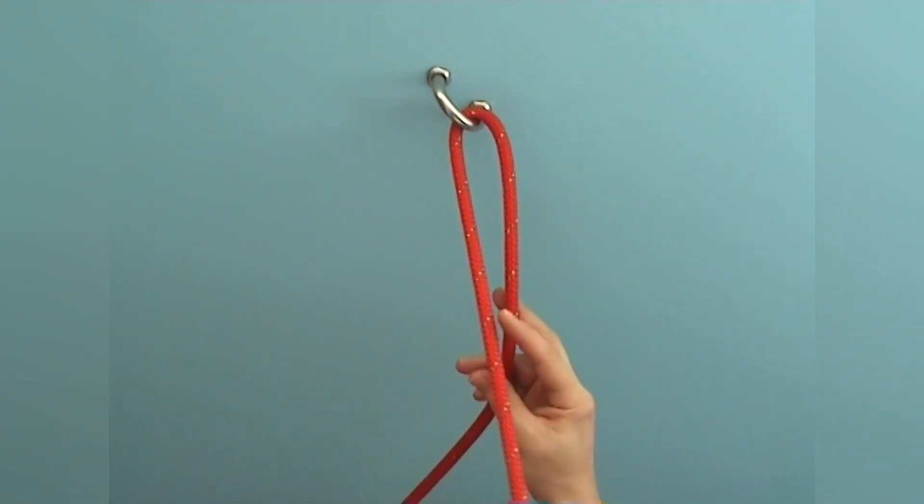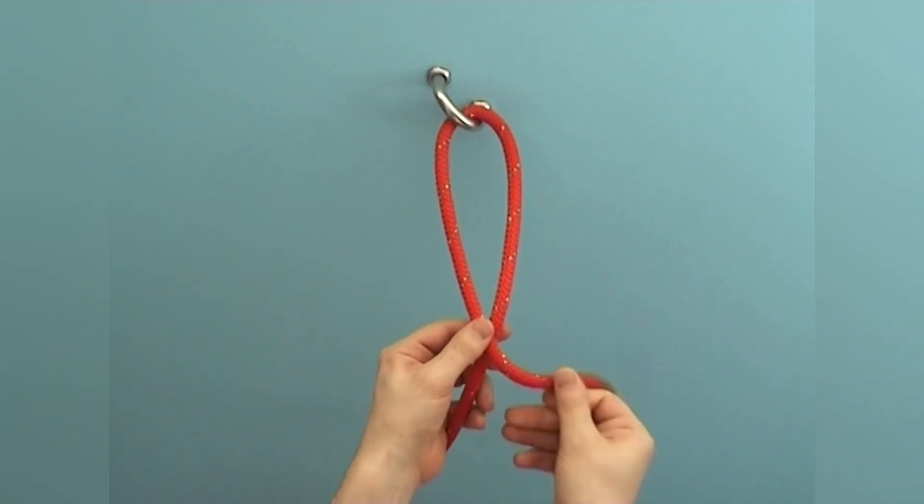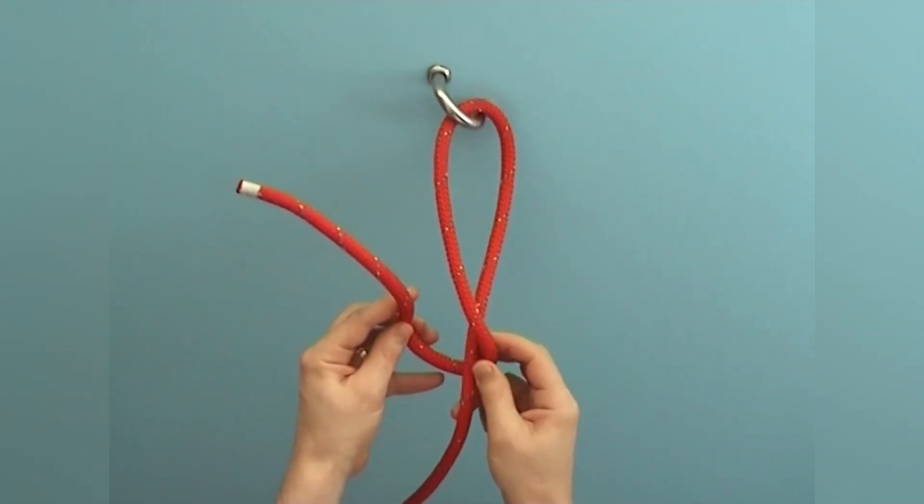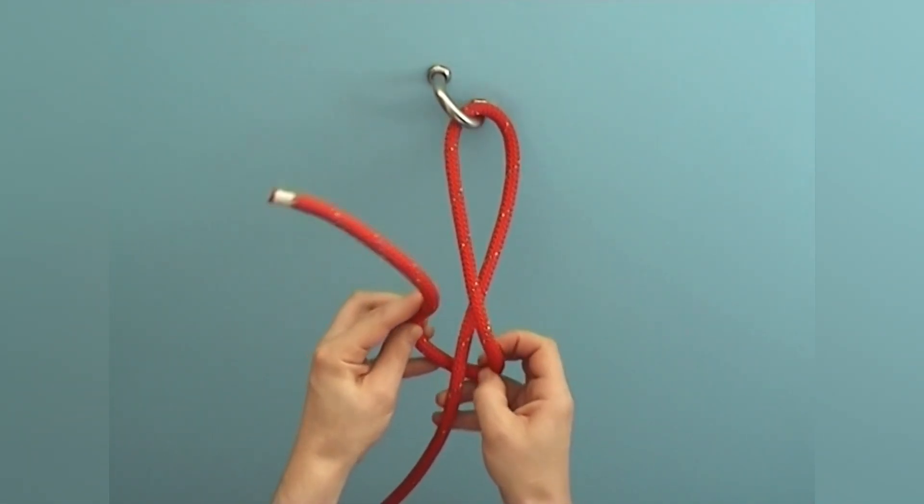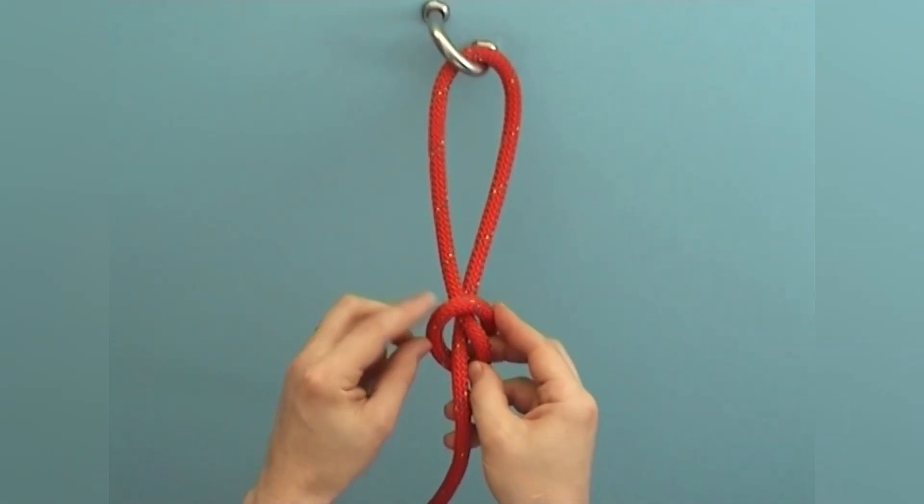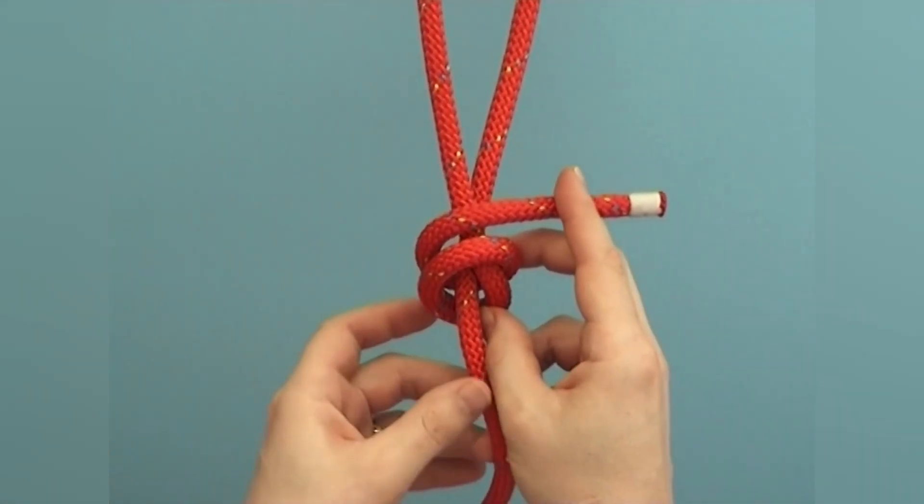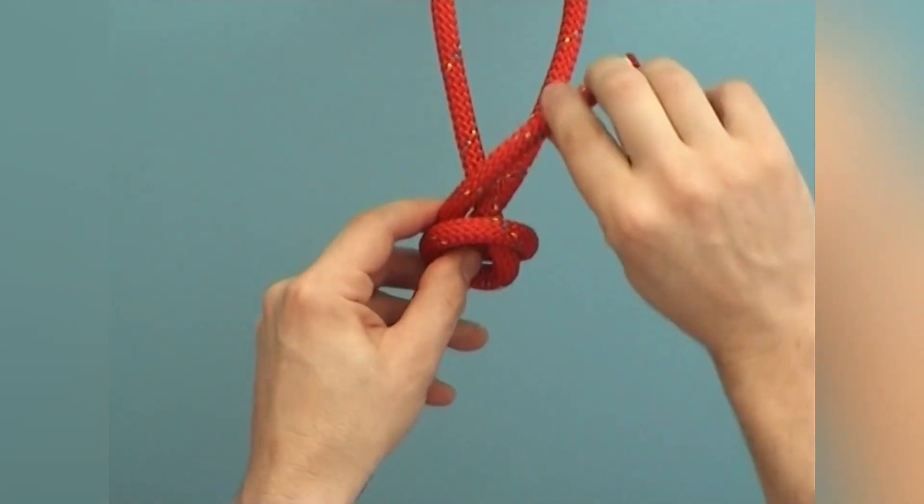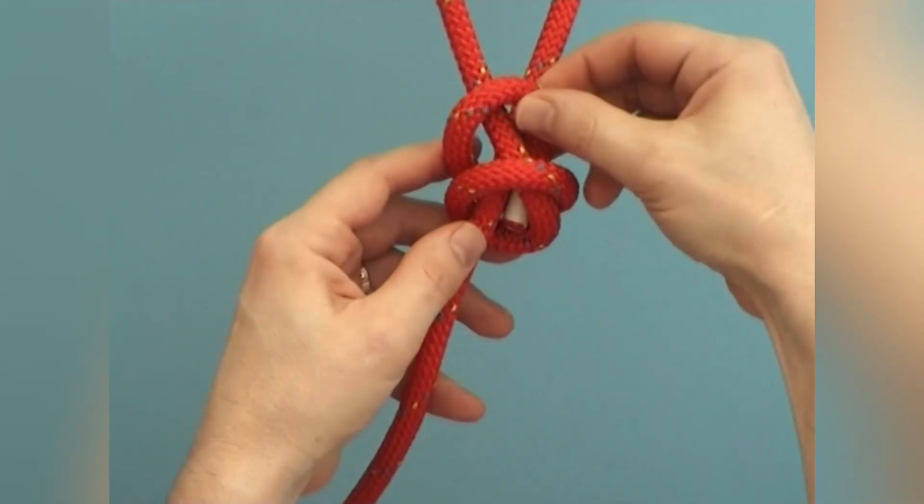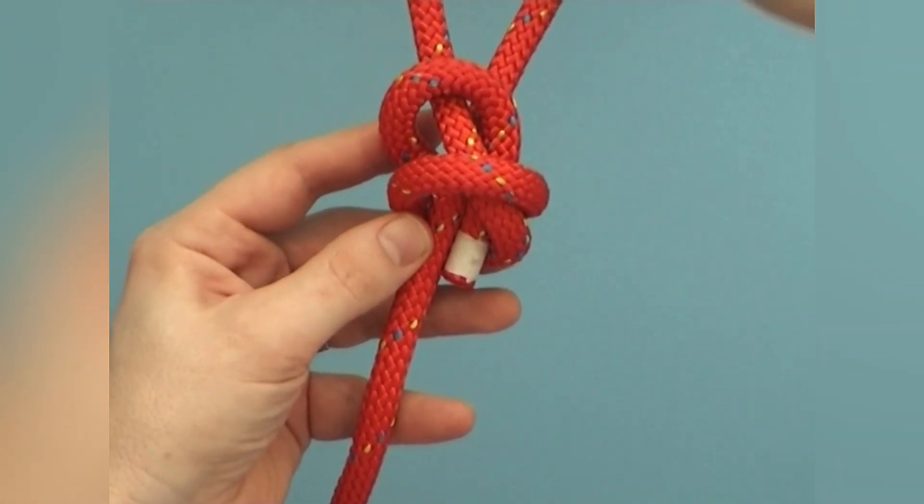To secure with a scaffold knot, wind the working end around the standing part once. Then cross over here and make another round turn on the side towards the eye. Lead the working end past this part and tuck it out through the knot, away from the eye and parallel to the standing part.